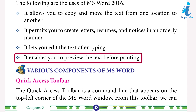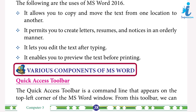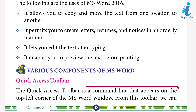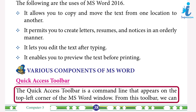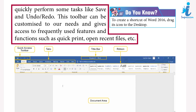MS Word lets you edit text after typing and enables you to preview text before printing. Components of MS Word: the Quick Access Toolbar is a command line that appears on the top left corner of the MS Word window. From this toolbar we can quickly perform tasks like save, undo, and redo. This toolbar can be customized to our needs and gives access to frequently used features and functions such as quick print and open recent files.